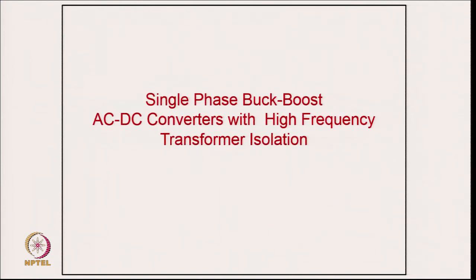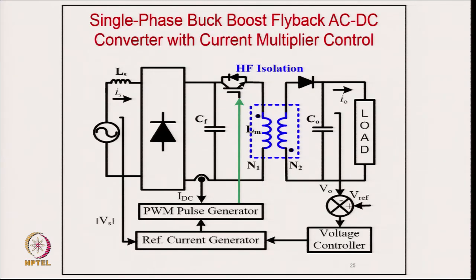Coming to single-phase buck-boost AC-DC converters with high-frequency transformer isolation — the purpose of isolation here is also to provide multiple outputs. One output must be tightly regulated, but others can follow the transformer turns ratio. This allows multiple DC supply outputs from one converter.